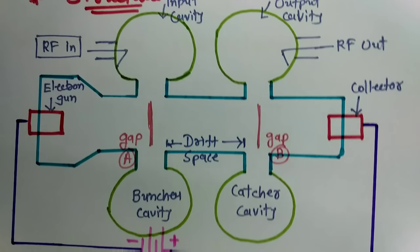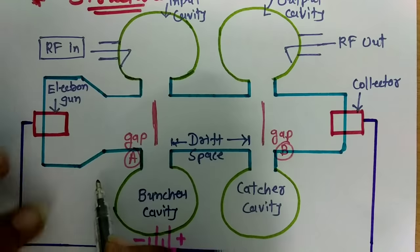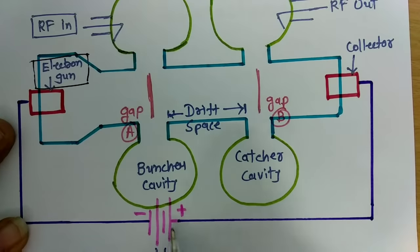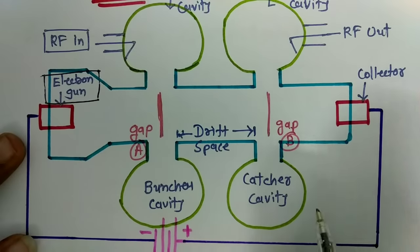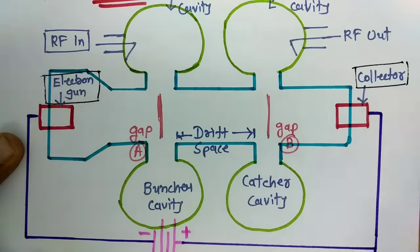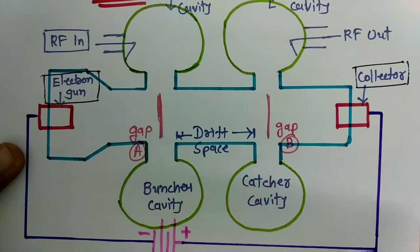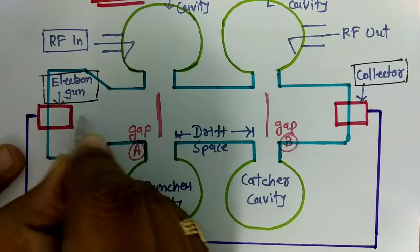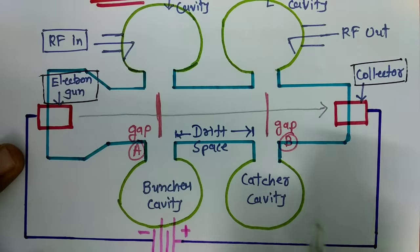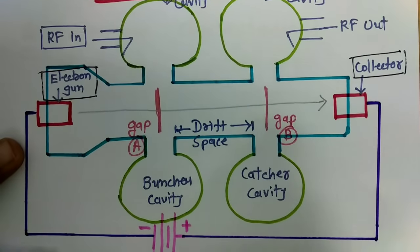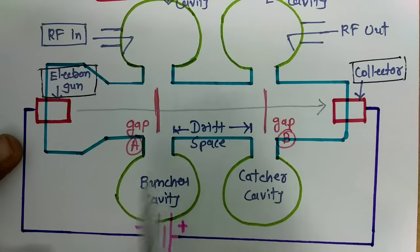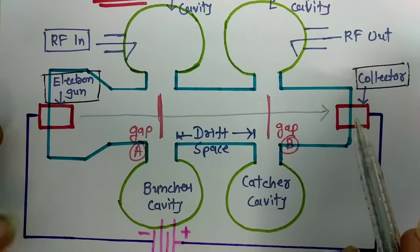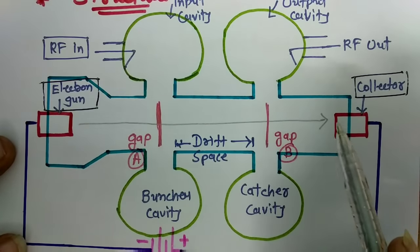Here we can see the structure of the two-cavity klystron amplifier. This is the electron gun, which is connected with the negative terminal of a battery, and the positive terminal of the battery is connected with the collector. Because of that, electrons generated here will travel in this direction. This is a two-cavity klystron amplifier, and we are studying how it will amplify the signal.